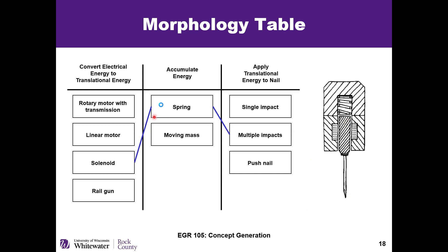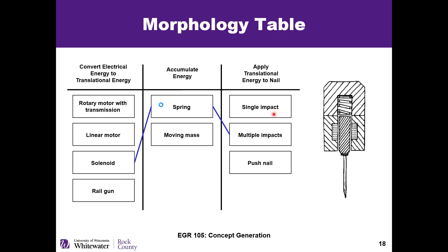We could pick another combination — like a rotary motor with a spring and a single impact. There are many different ways to use a rotary motor. Here we have one with a rack and pinion setup with some missing teeth. As it rotates up, the rack goes up into the spring, collecting energy, then drives it down with one big impact. Or we could use a cam to do a similar thing — pushing into the spring and then releasing all that energy at once when it reaches the other side.